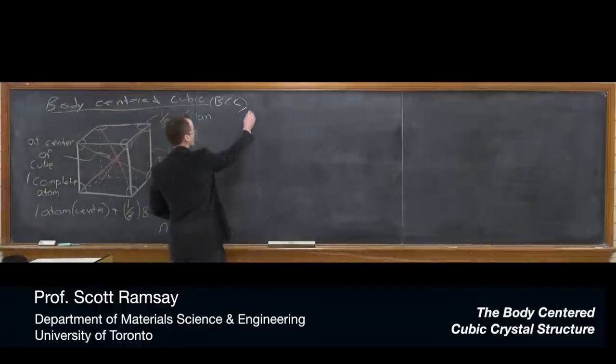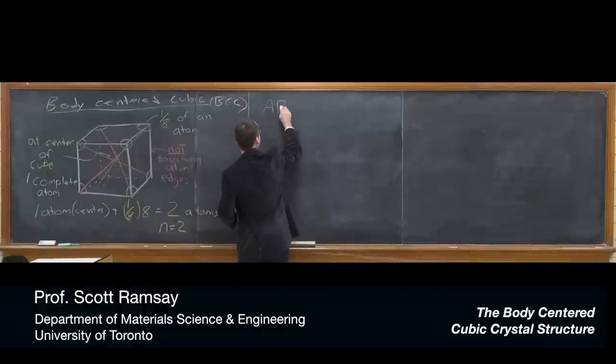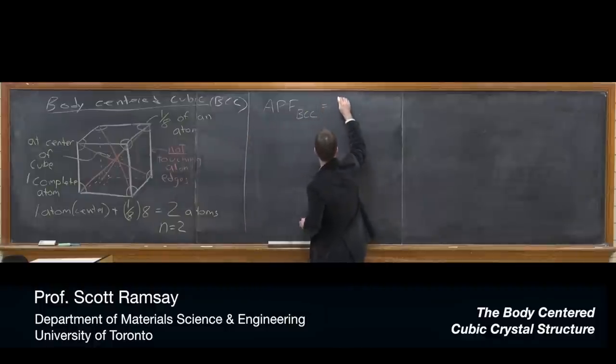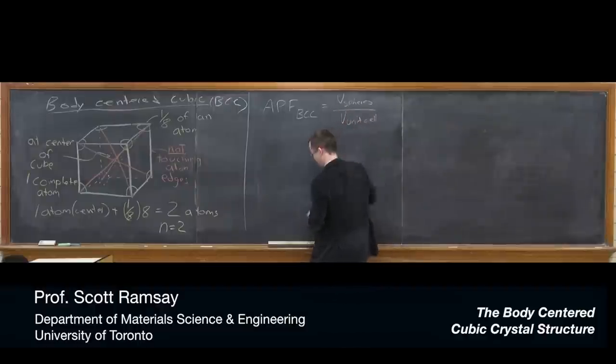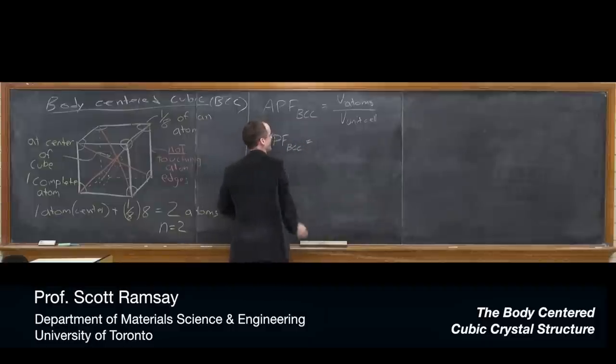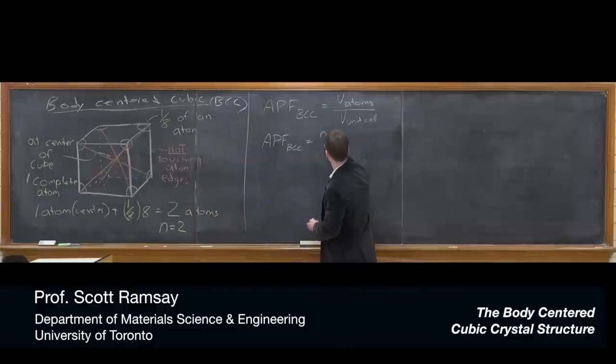With that knowledge, we can now calculate the atomic packing fraction for BCC. It's going to be the volume of the spheres inside the unit cell divided by the volume of the unit cell. Actually, if I want to be really thorough, I should start with the volume of the atoms, and we're modeling the atoms as spheres. So the APF for BCC is going to be the number of spheres times the volume of a sphere divided by the volume of a cube.